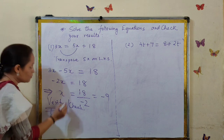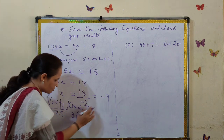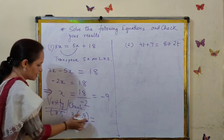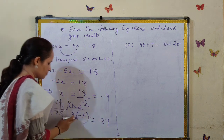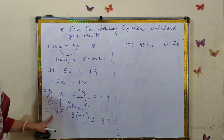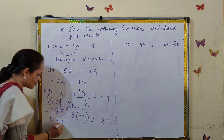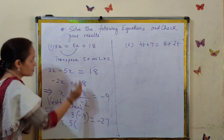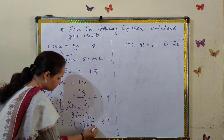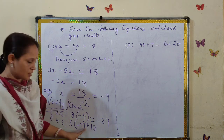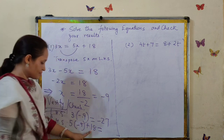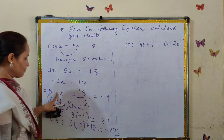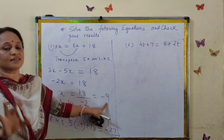On the left-hand side, when we put x equal to minus 9: 3 times minus 9 — 3 nines are 27, so we get minus 27. On the right-hand side, putting x equal to minus 9: 5 times minus 9 plus 18 gives minus 45 plus 18, which equals minus 27. Both sides are equal.